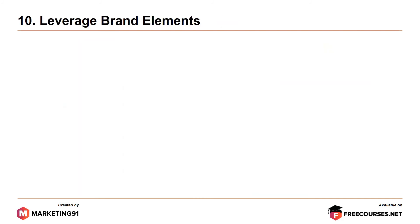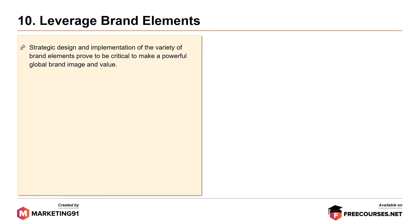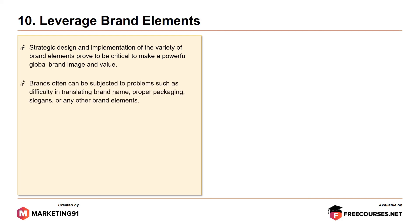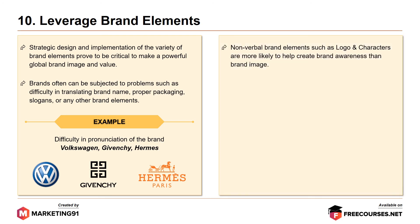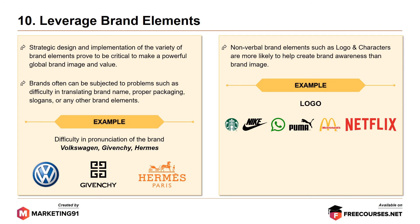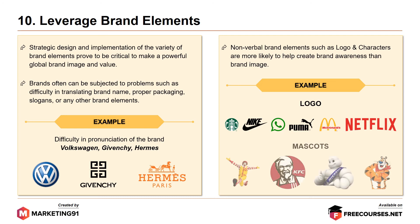And finally, the tenth commandment: leverage brand elements. Strategic decisions and implementation of brand elements prove critical to building a powerful global brand image and value. Brands often face problems such as difficulty in translating brand names, packaging, slogans, or other brand elements. For example, difficulty in pronunciation of brands like Volkswagen and Hermes. Non-verbal elements such as logos and characters are more likely to help create brand awareness. Examples of famous logos include Starbucks, Nike, WhatsApp, Puma, McDonald's, and Netflix. Famous brand mascots include Ronald McDonald, the KFC Colonel, the Michelin Tire Man, and Tony the Tiger.